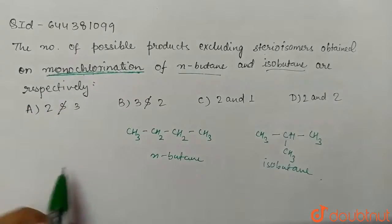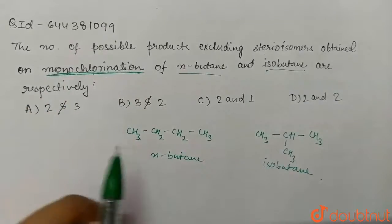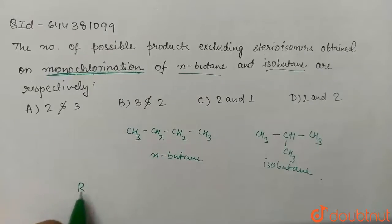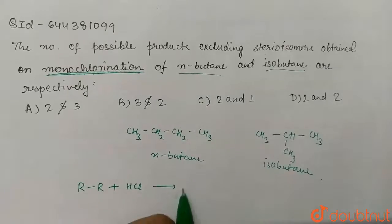In monochlorination we react this alkane with HCl and we will get Cl, that is haloalkane.